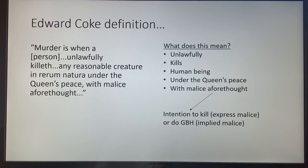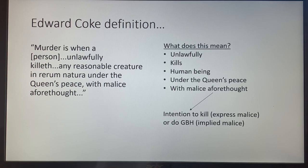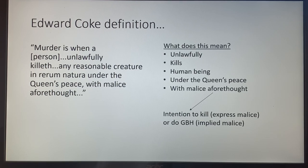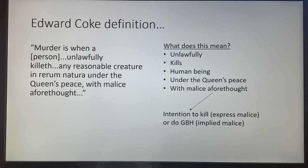The first thing you need to know is the definition, which comes from Edward Coke in the 17th century — the 1600s. In old-fashioned wording: murder is when a person unlawfully killeth any reasonable creature in rerum natura under the Queen's Peace with malice aforethought. You don't have to learn that verbatim. You can learn the more modern version: unlawfully kills a human being under the Queen's Peace with malice aforethought. Malice aforethought is the mens rea — it means intention to kill, which we call express malice, or intention to do GBH, which we call implied malice.